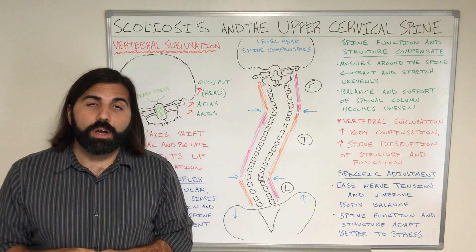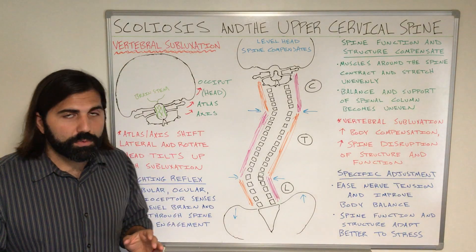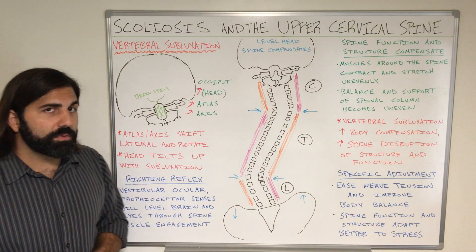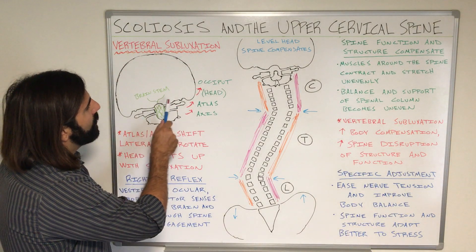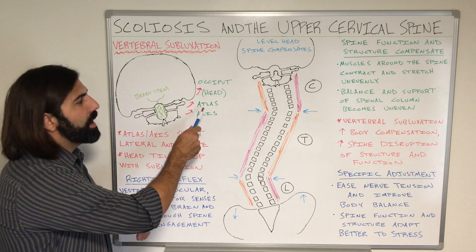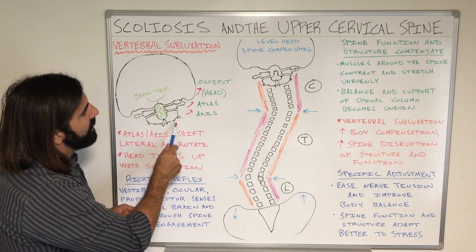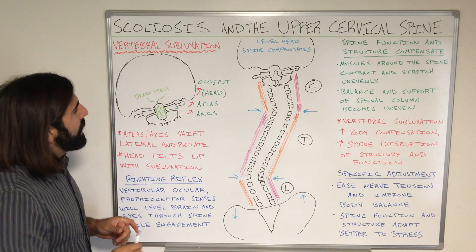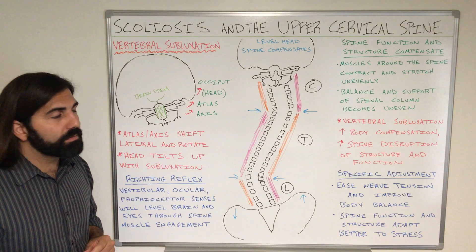In order to talk about the connection between the upper cervical spine and scoliosis, let's do a simple crash course in anatomy and physiology. In the upper cervical spine we focus on four main structures: the occipital bone found on the base of our head or skull, the atlas bone or first cervical vertebra, and the axis bone or second cervical vertebra. Housed and protected in these three bones we find the brainstem area of our nerve system.